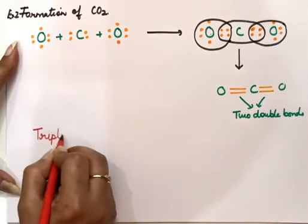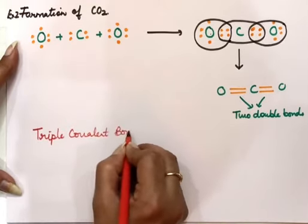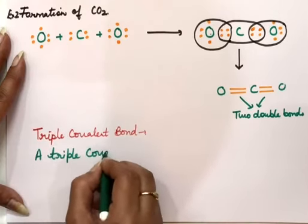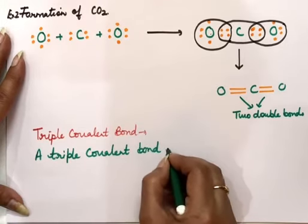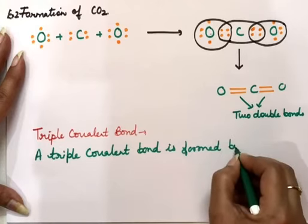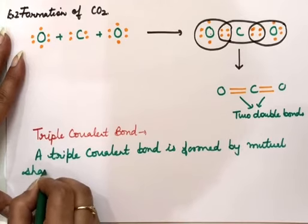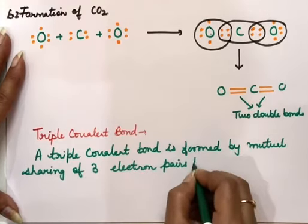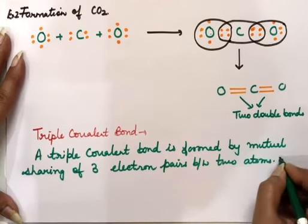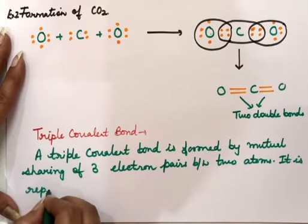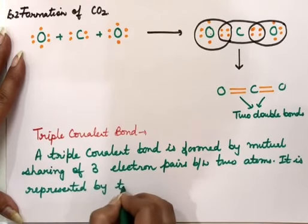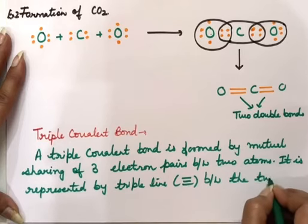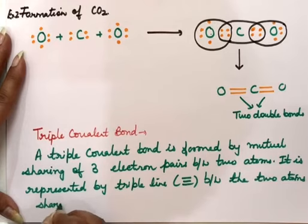Triple covalent bond: formed by mutual sharing of three electron pairs between two atoms. It is represented by a triple line between the two atoms sharing the electrons.